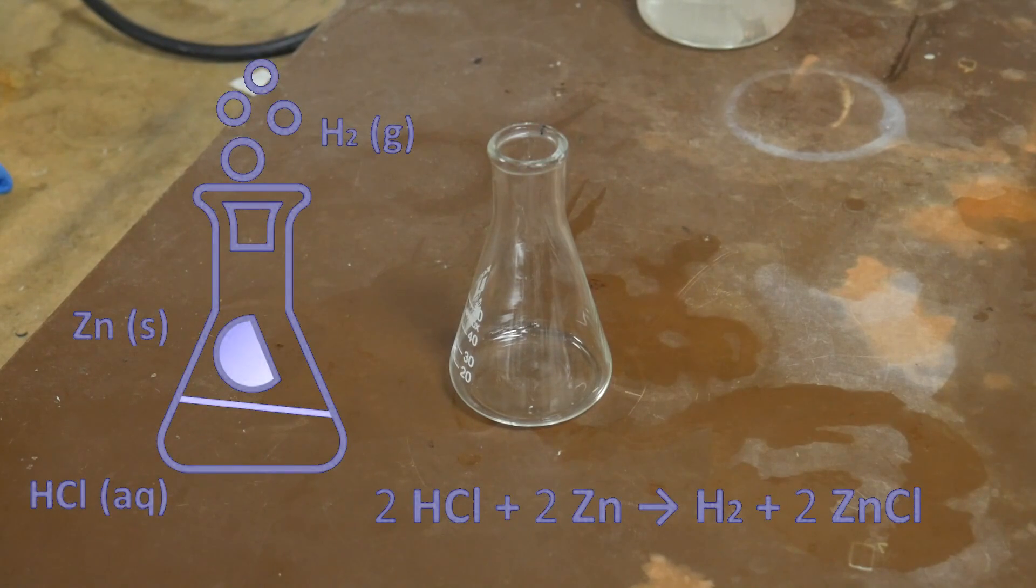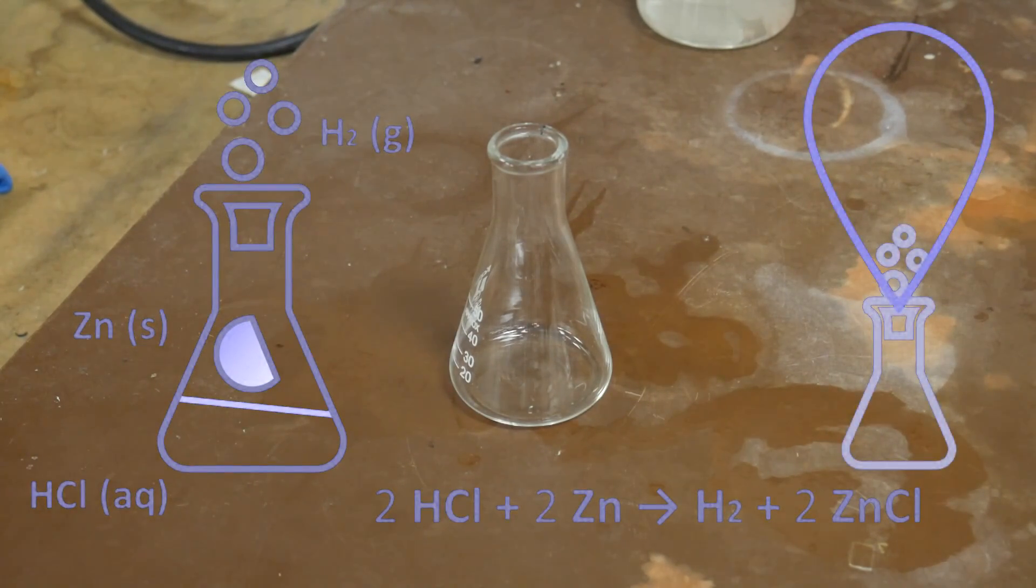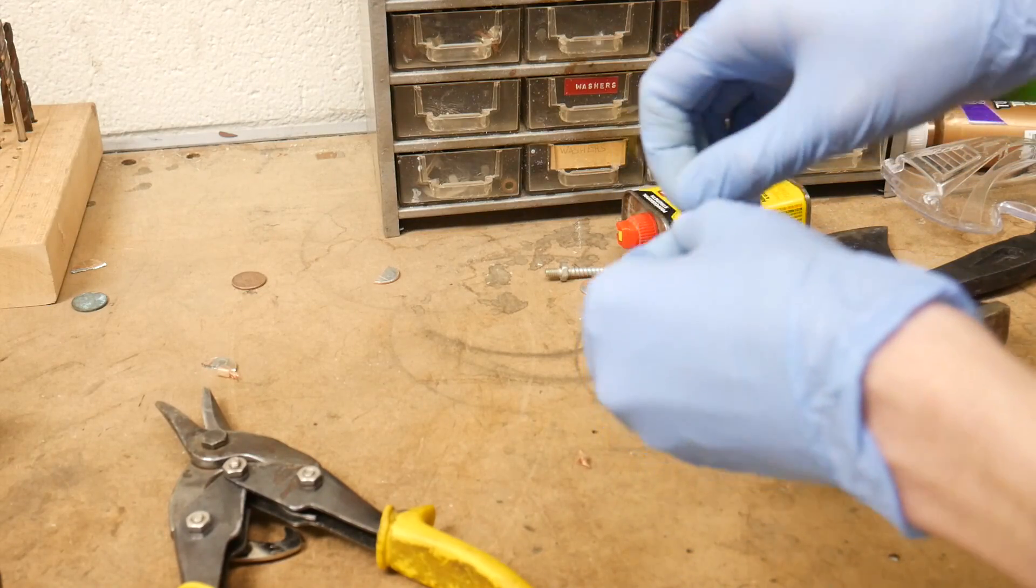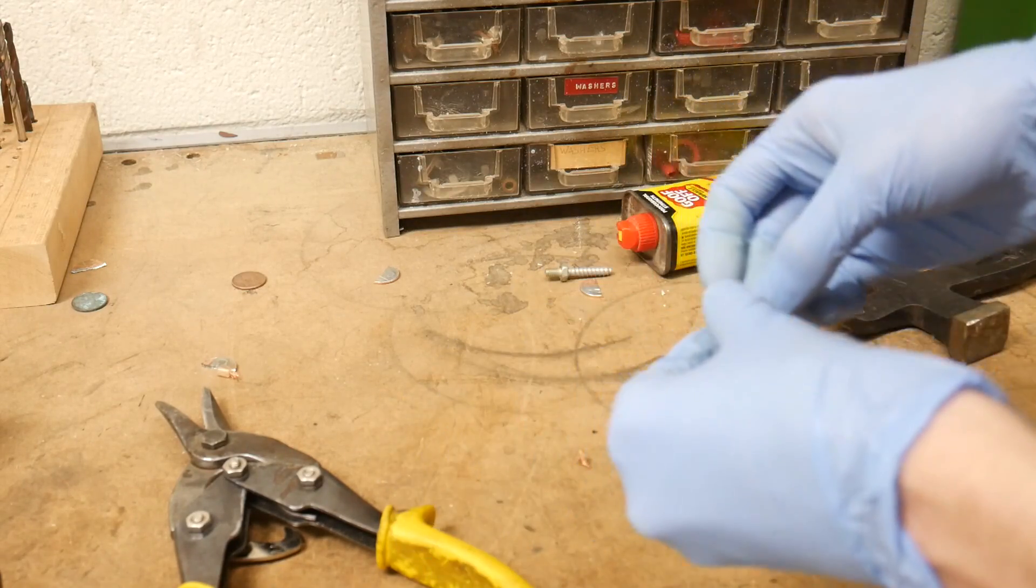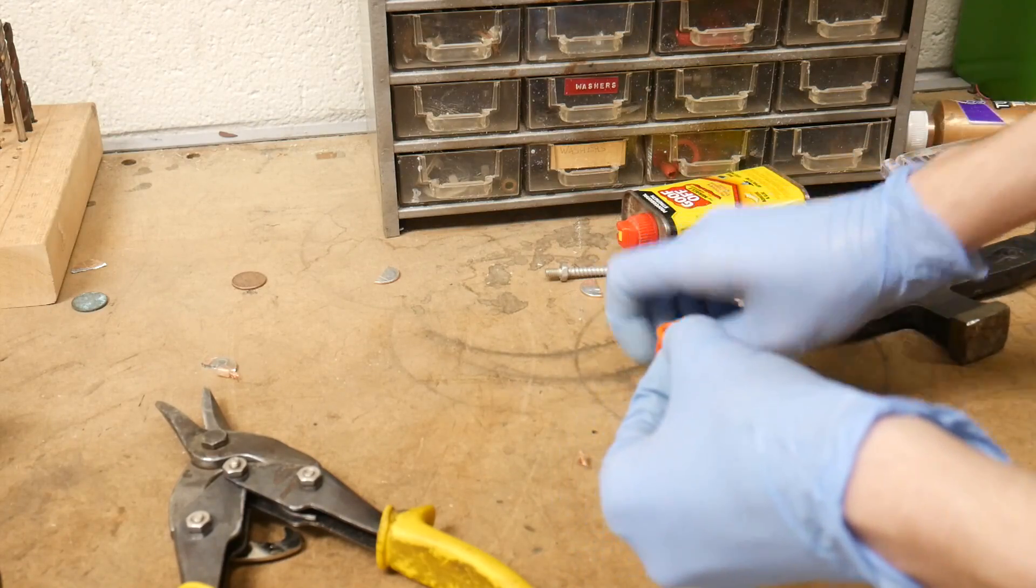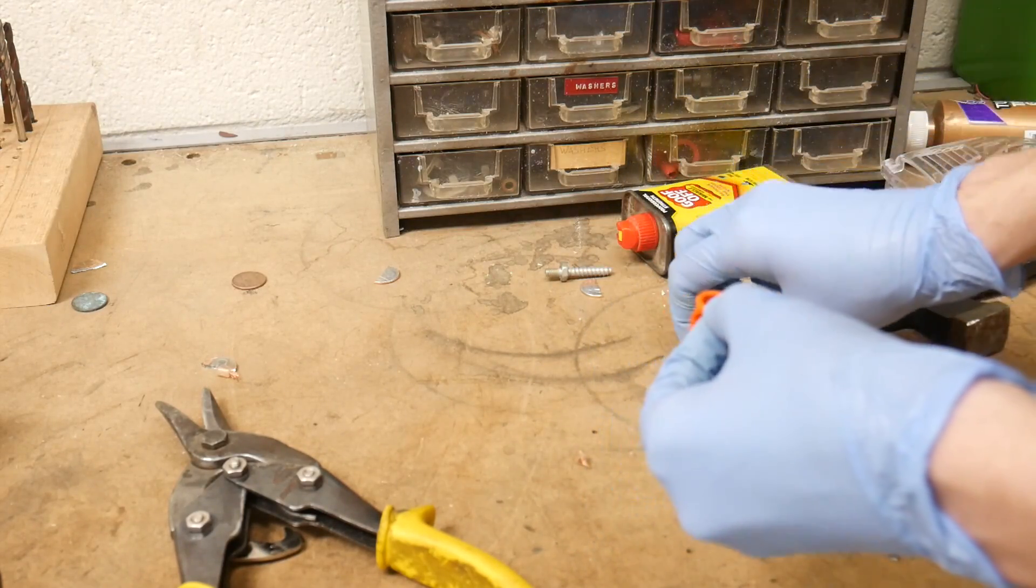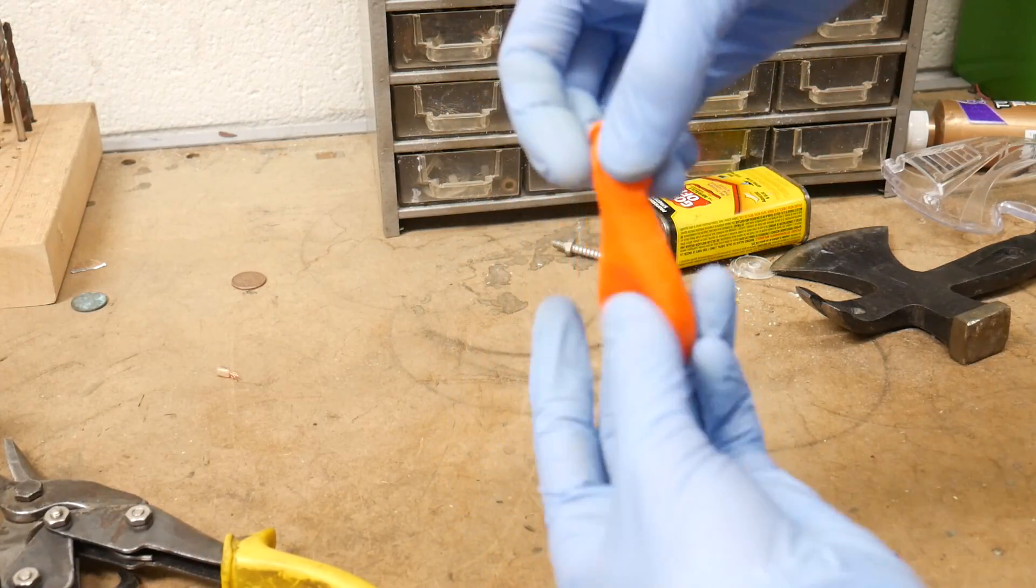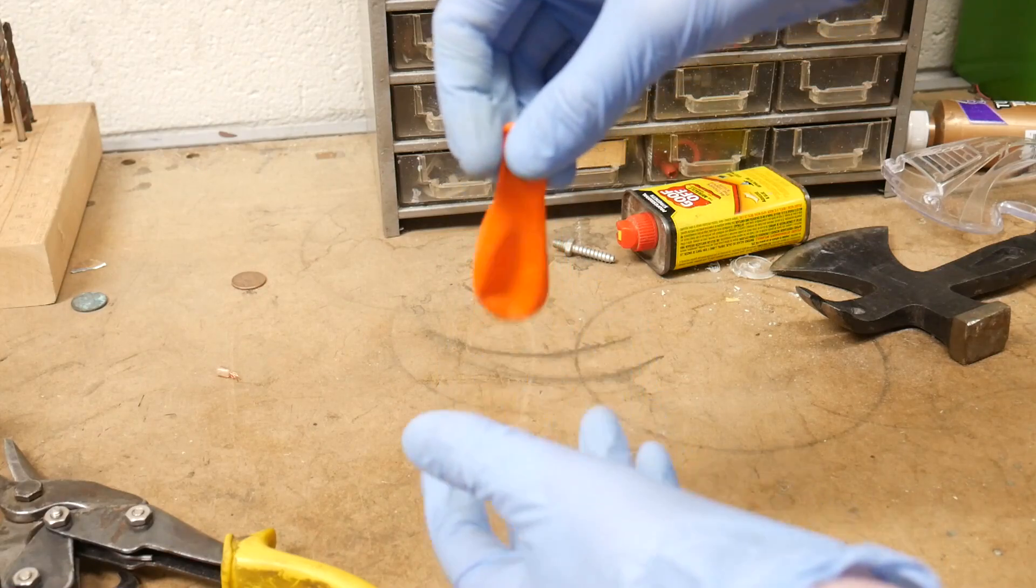Now this time when I make some hydrogen gas inside this Erlenmeyer flask I'm going to put a balloon on top and allow the pressure of the created hydrogen to blow it up. I'm just going to put our zinc pennies inside the balloon trying not to puncture it. So now we have our balloon filled with some more zinc. Let's go fill it up.